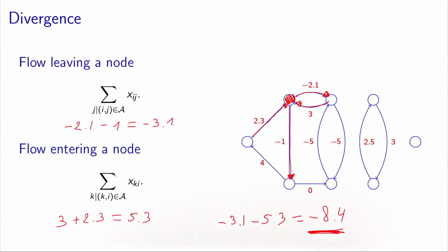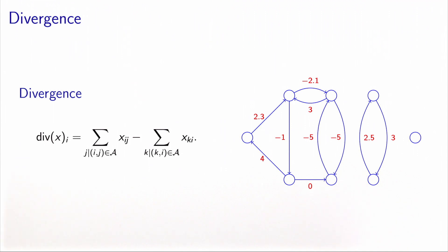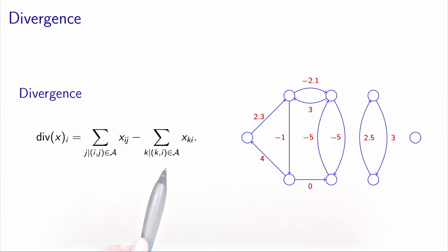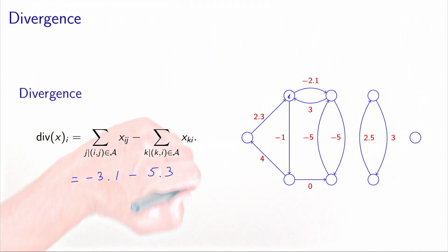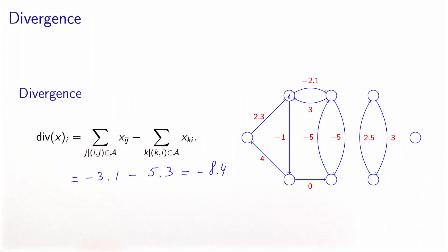The divergence is the total flow that leaves the node minus the total flow that enters the node. The fact that it is negative means that, globally speaking, the node is attracting flow — there is a quantity of 8.4 units of flow staying at the node. In the logistics analogy, this would be a customer. We define the divergence of node I as the sum of flow going out minus the sum of flow entering, giving a divergence of -8.4.